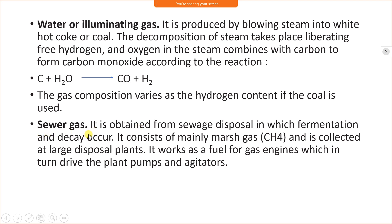Sewer gas is obtained from sewer material through fermentation and decay. It consists mainly of marsh gas — that is, methane (CH4). It is collected at large disposal plants and works as fuel for gas engines which drive plant pumps and agitators.